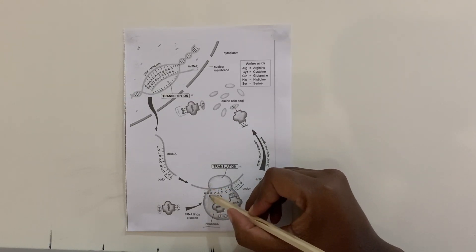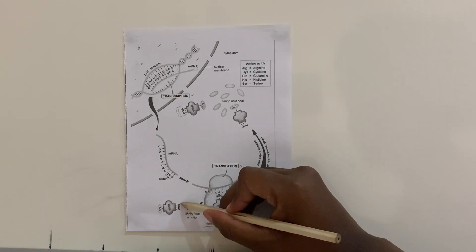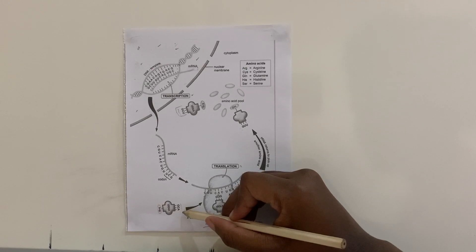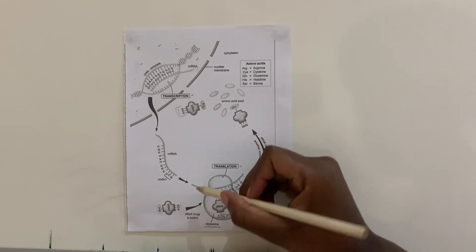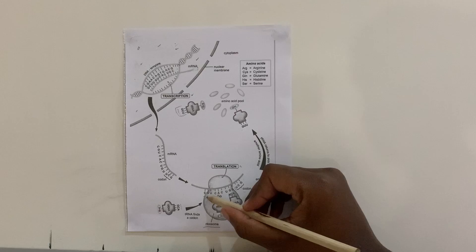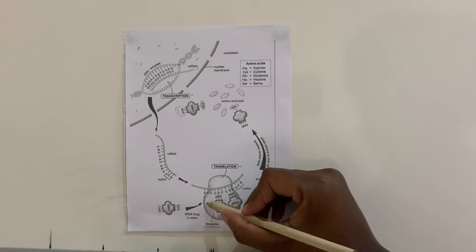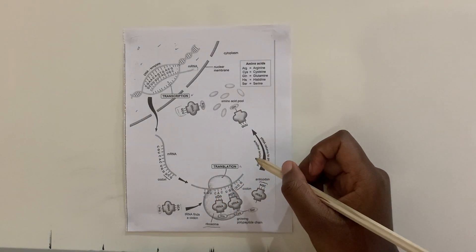And then those two are bonded by weak hydrogen bonds, obviously. But then the bonds between amino acids are peptide bonds. So amino acids are linked together by peptide bonds.